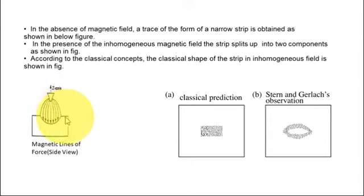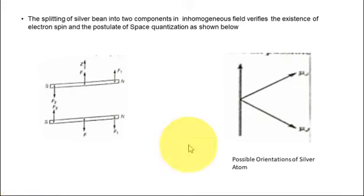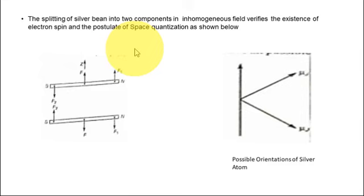After passing through the inhomogeneous magnetic field, the beam is split into two parts, as observed by Stern and Gerlach. But according to classical physics, there is only a continuous strip — no splitting. This splitting of the silver beam into two components verifies the existence of electron spin. The postulate of space quantization is also verified by the Stern-Gerlach experiment, confirming that electrons have parallel and anti-parallel spins — clockwise and anti-clockwise directions around the nucleus.